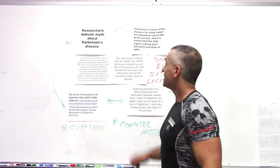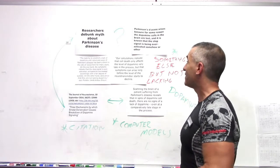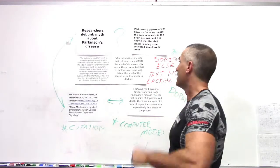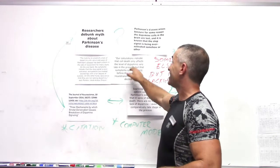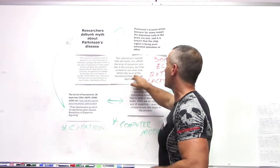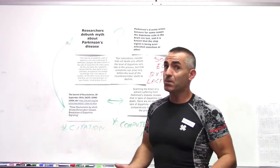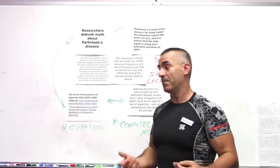Our calculations indicate that cell death only affects the level of dopamine very late in the process, if at all. But the symptoms can arise long before the level of neurotransmitters start to decline. Meaning you start getting signs of Parkinson's but yet the dopamine levels are normal. So what's going on?